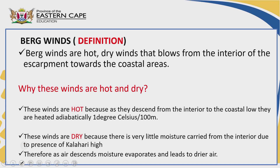Bergwinds. We have the term here — Berg. What does the term Berg mean? It's an African word that means mountain. These are winds that occur in mountainous areas and affect mountainous areas in South Africa. The mountain has a dry side and a wet side, and Bergwinds are dominant on the dry side.